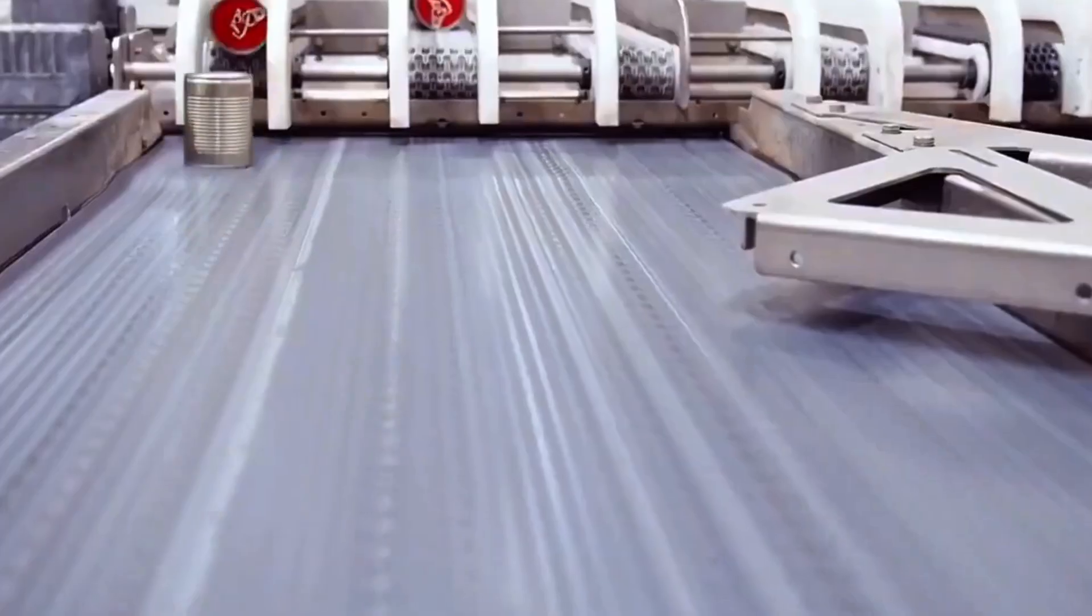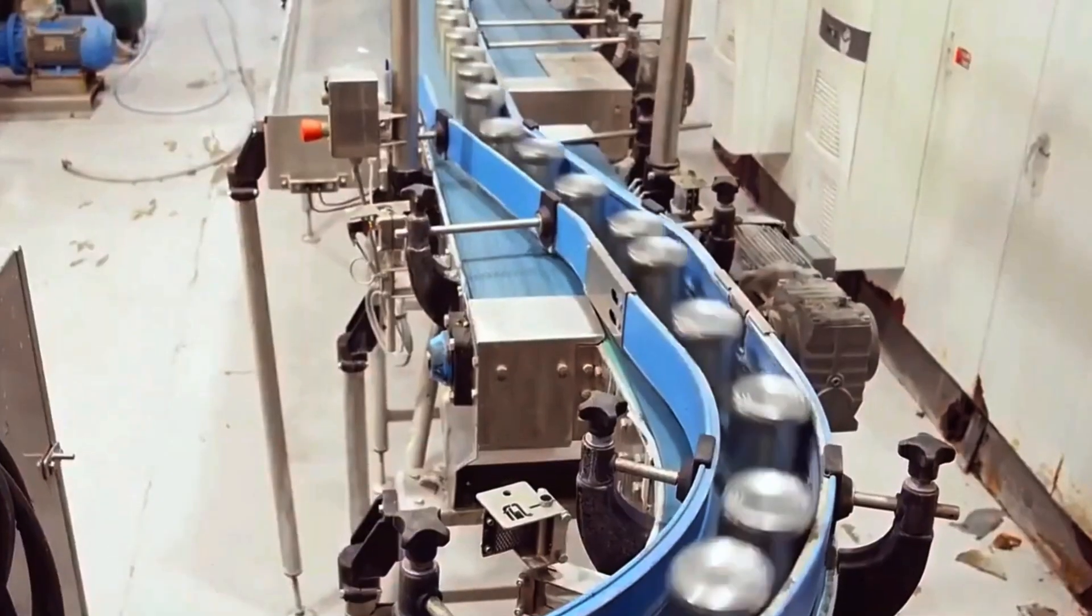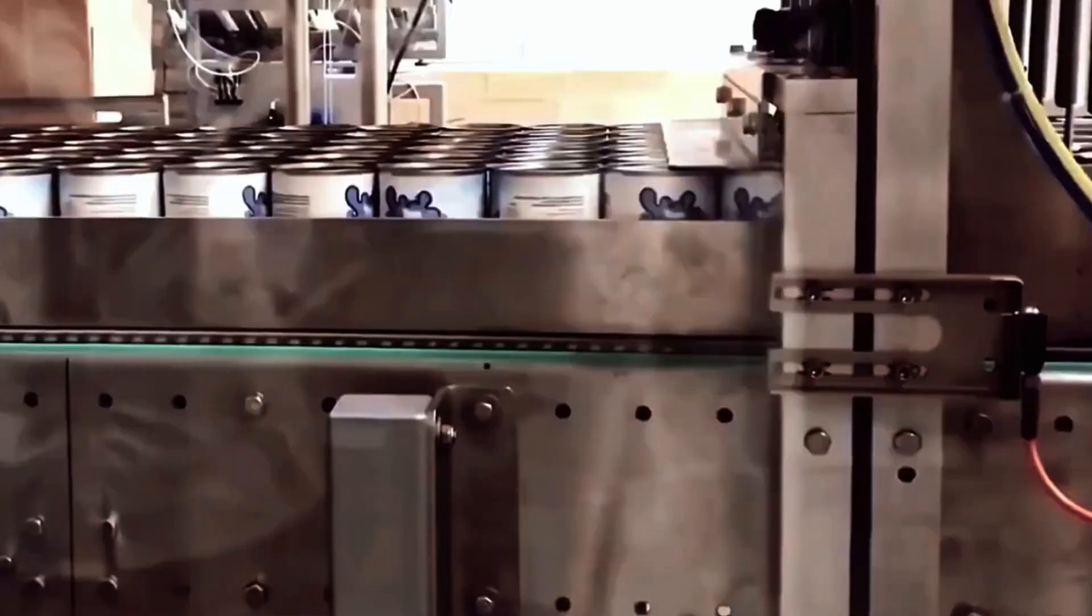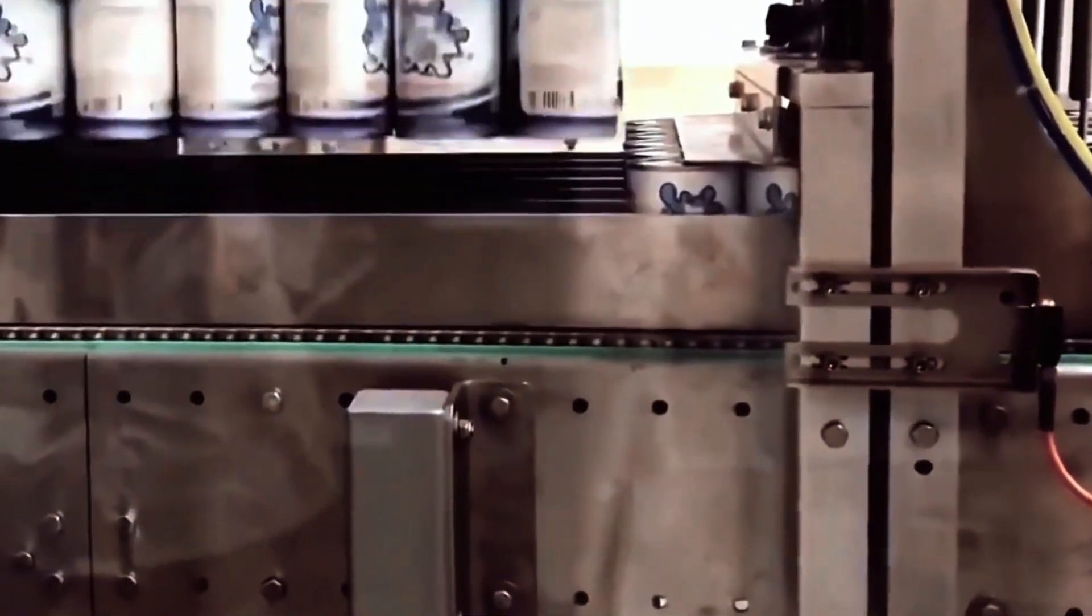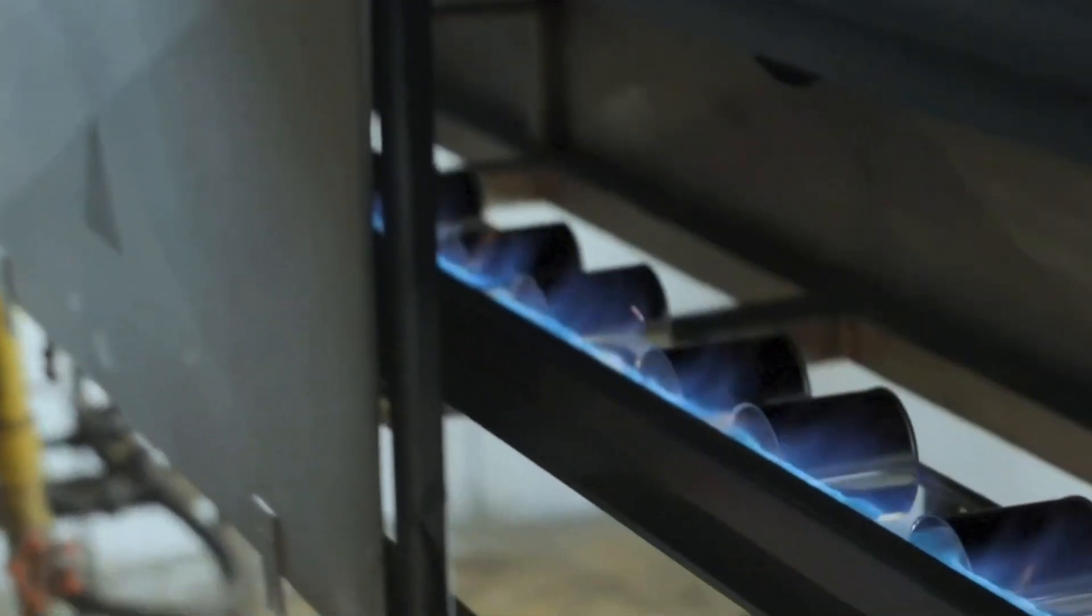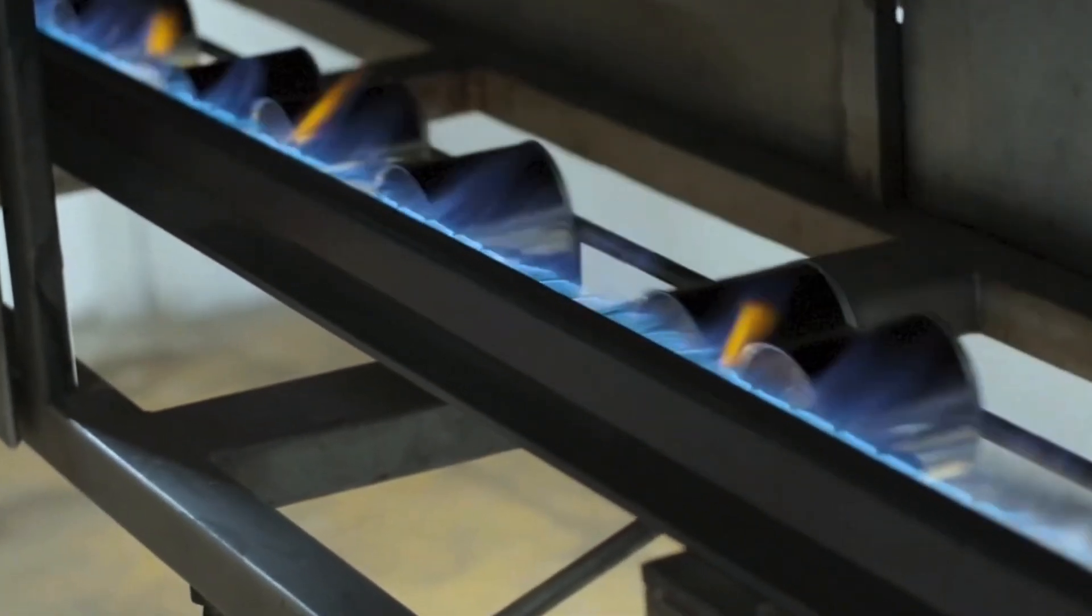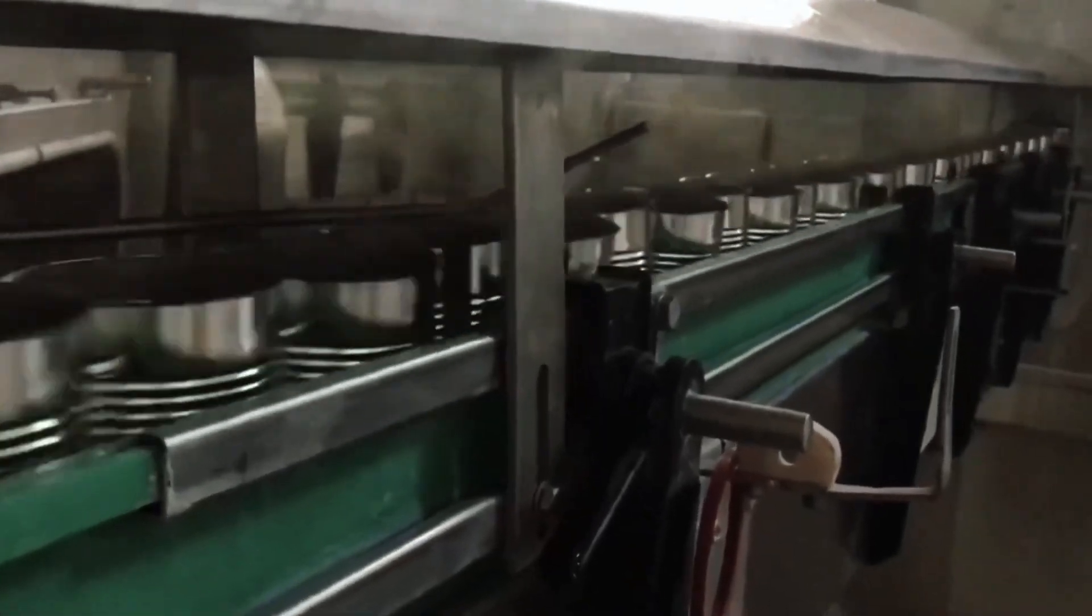Then comes the labeling stage. Each can receives the brand logo, ingredient list, nutritional information, manufacturing date, expiration date, and barcode. Labeling machines operate at speeds of up to 500 cans per minute, and every label is checked by a camera. If a label is misaligned by even a millimeter, the product is rejected.